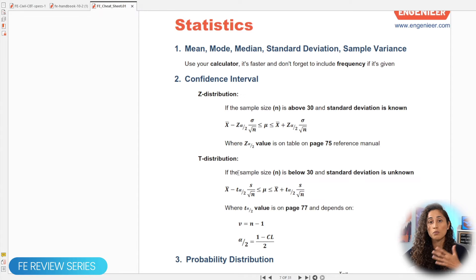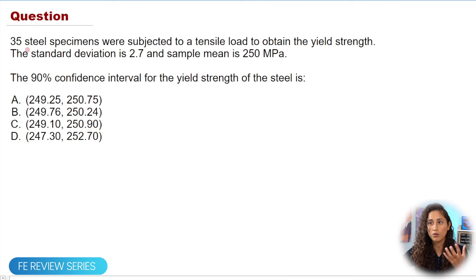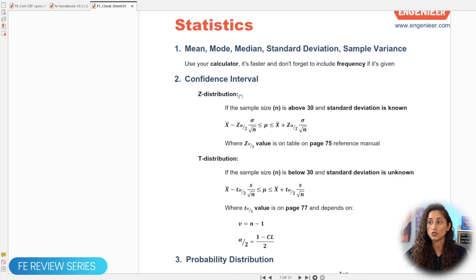If you guys remember from our problem, we have 35 steel specimens, right? Which means N is above 30 and then also we are giving the standard deviation. So which means we're going to actually use the Z distribution equation.